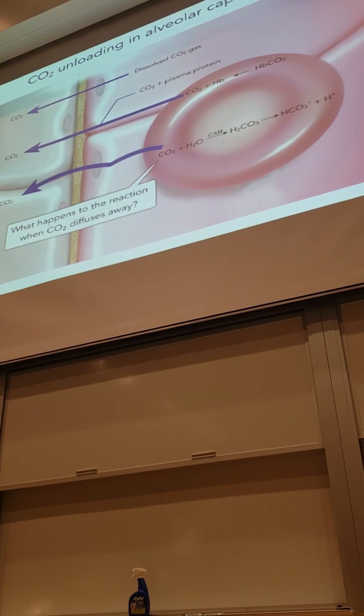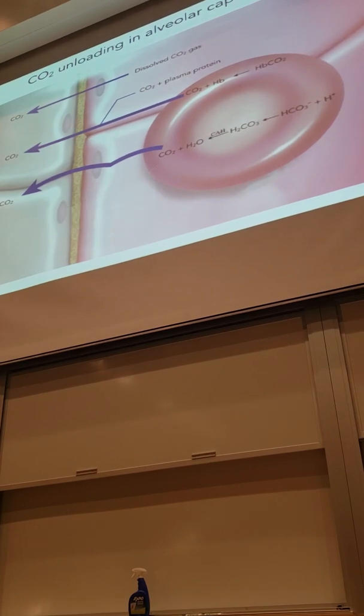We're going to reverse it. We're taking away CO2, which is going to favor this equation going back the other way. So that's what happens. This equation runs back the other way. Carbonic anhydrase is still there, still facilitates the reaction, makes sure that it happens rapidly. And we're going to get CO2 lean.